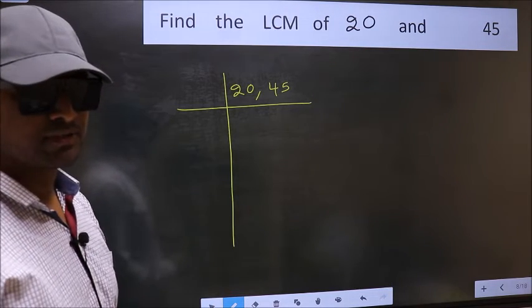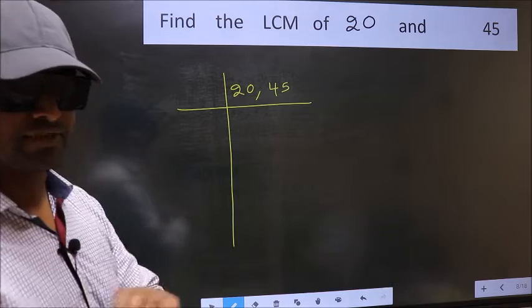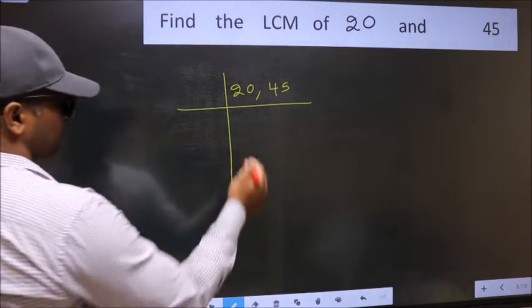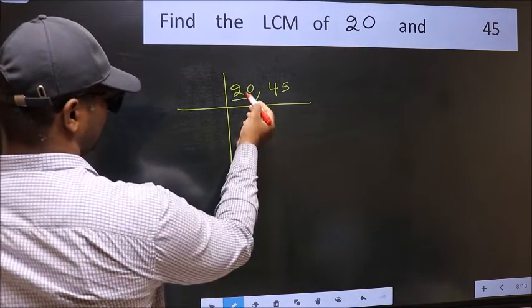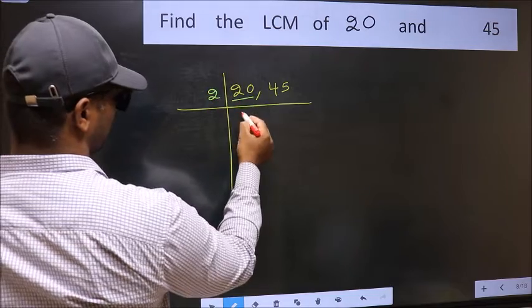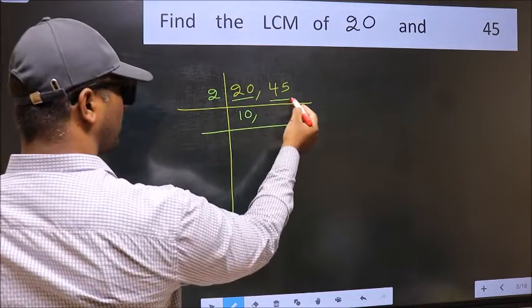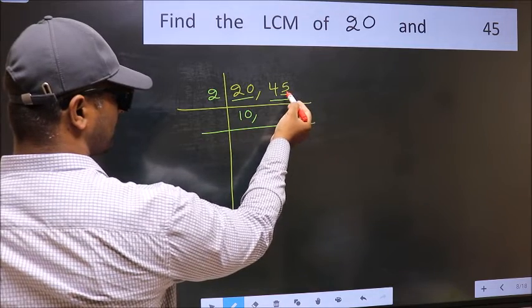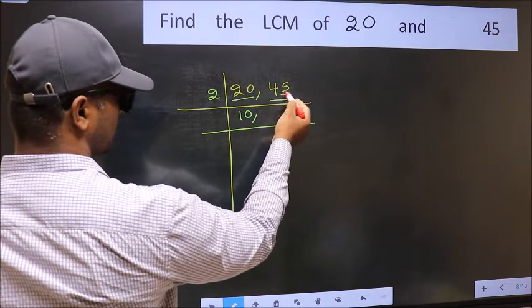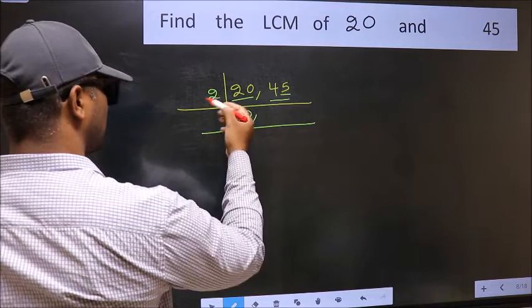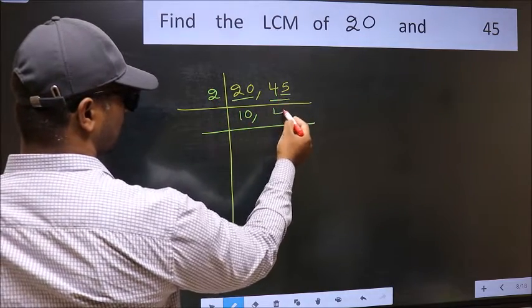Now you should focus on the first number which is 20 here. 20 is 2 tens, 20. The other number 45, last digit 5, not even. So this number is not divisible by 2, so you write it down as it is.